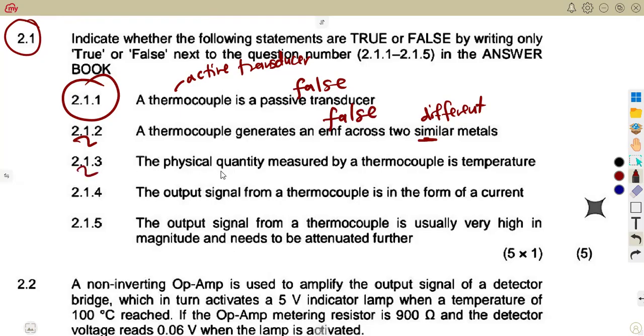2.1.3: the physical quantity measured by a thermocouple is temperature. That is actually true. We are measuring temperature. And the output signal from a thermocouple is in the form of current. No, that is false. The output is in the form of a voltage, which is now converted to a temperature.